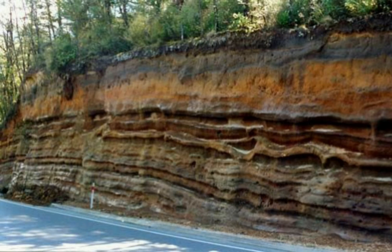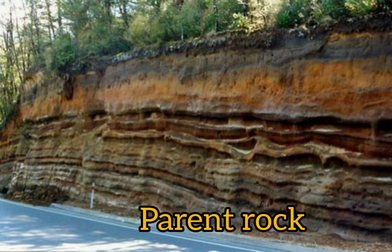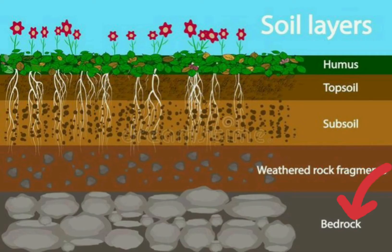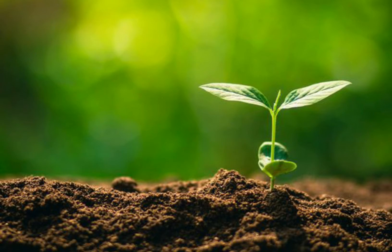The C horizon, or parent rock, is the layer below the subsoil. It is made up of small lumps of rock with cracks and crevices, and rainwater also collects in this region. Below the parent rock there is a solid rock called the bedrock. The bedrock is non-porous and hard and cannot be dug with a spade. Rainwater collects over the bedrock, forming a water table.